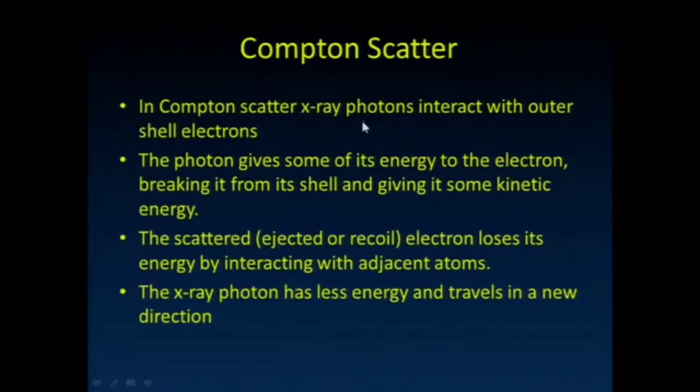Compton scatter, we talked about, we now get this interaction with typically some of these outer shell electrons. And these x-ray photons or gamma ray photons are going to give some of their energy to those and kick them out of the shell. And they're going to continue on in a slightly different direction.